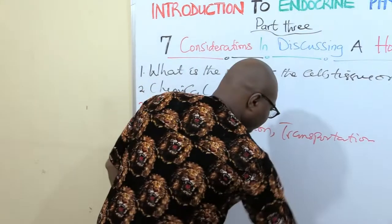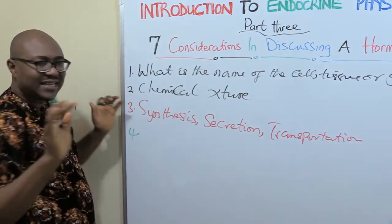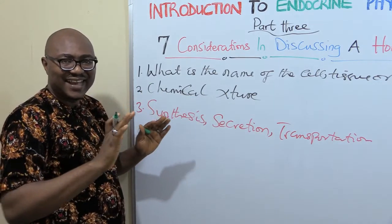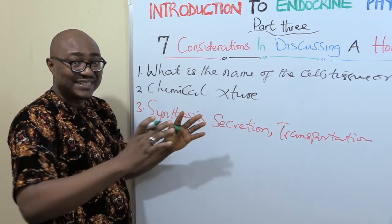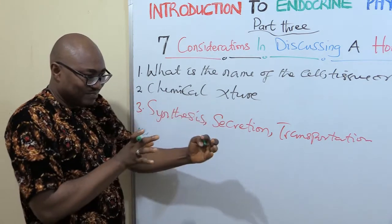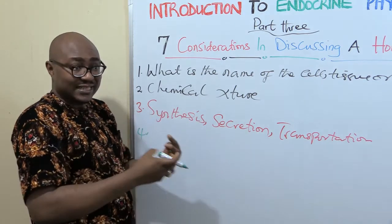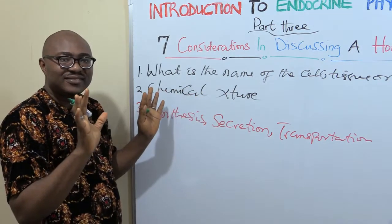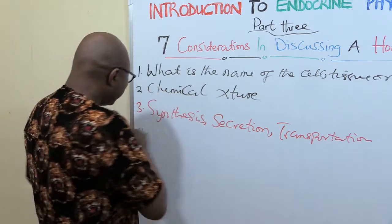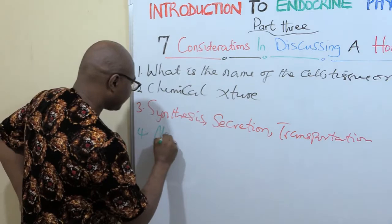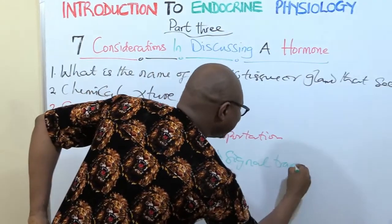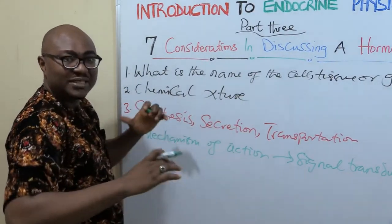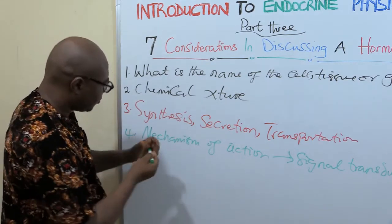Then the hormone has been transported and gets to the target cell. You need to know what happens when it gets there — the mechanism of action, or signal transduction. How the hormone, which carries the message, is now transformed into physiological multiple action. Whether it uses second messengers and so on to operate — you need to have some knowledge about that.